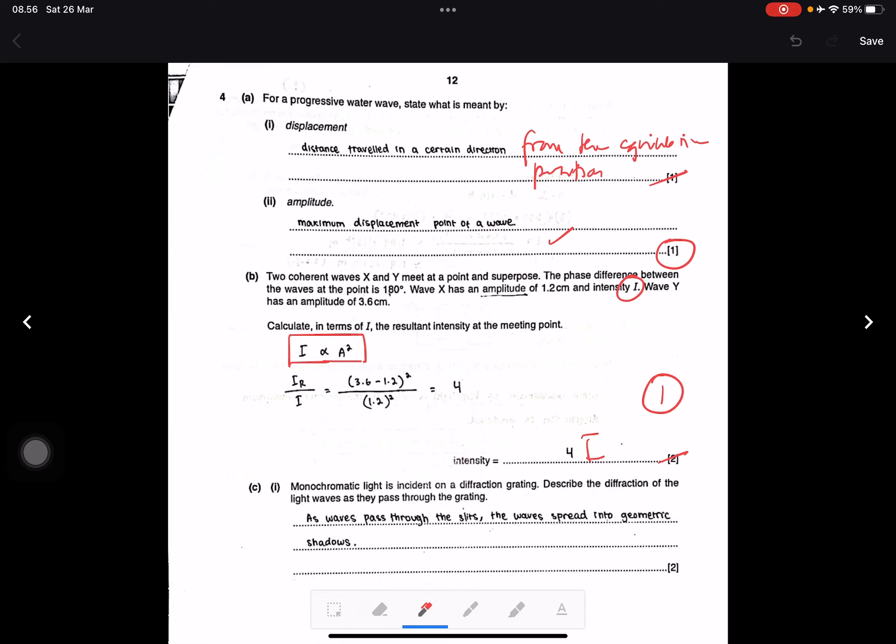Question C: Monochromatic light is incident on a diffraction grating. Describe the diffraction of the light waves as they pass through the grating. As waves pass through the slits, the waves spread into geometric shadows.